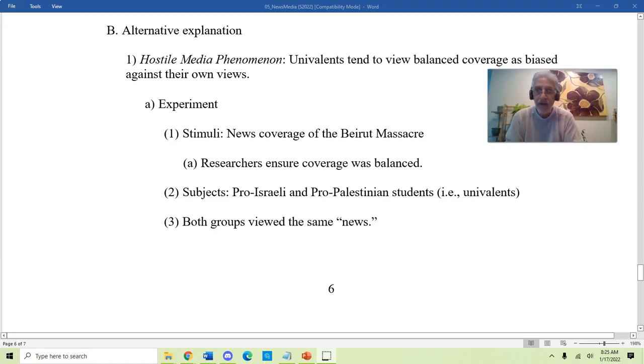In this study that was done, what the researchers did was they created a news report about the Beirut Massacre. And the researchers ensured that the coverage in the report that they did themselves, it wasn't an actual news report, was balanced. It showed the perspective of the Israelis and the Palestinians. It gave them equal time. It presented challenging questions and easy questions to both sides. So that's the setup. In this experiment, students are walking in and they're going to view coverage of the Beirut Massacre. They think it's an actual news report, but it was actually put together by some researchers.